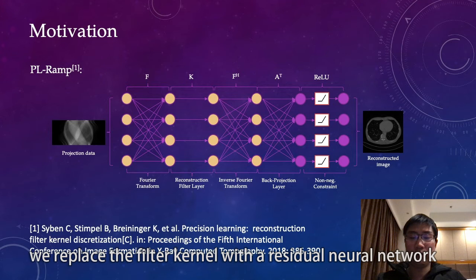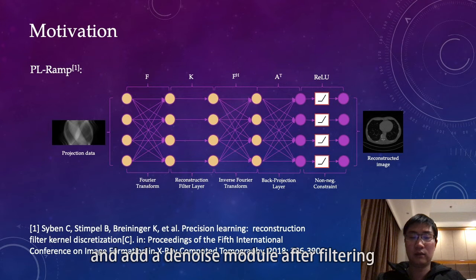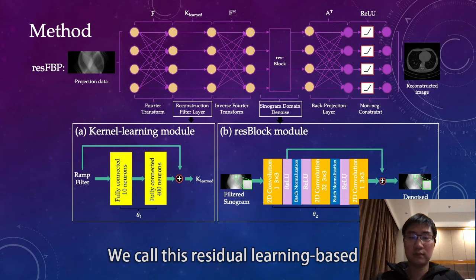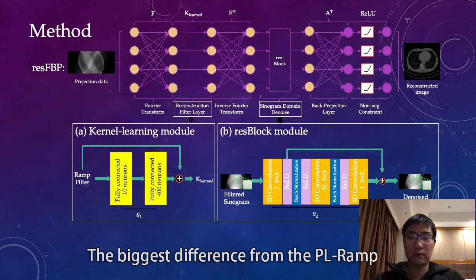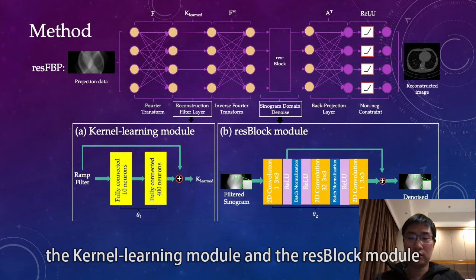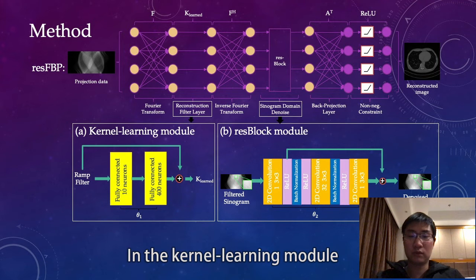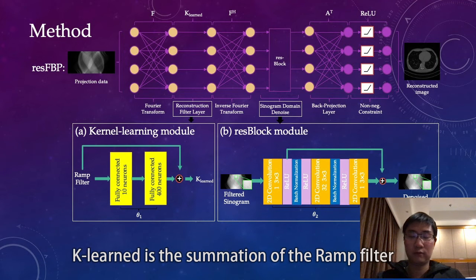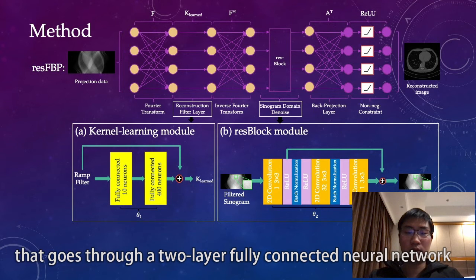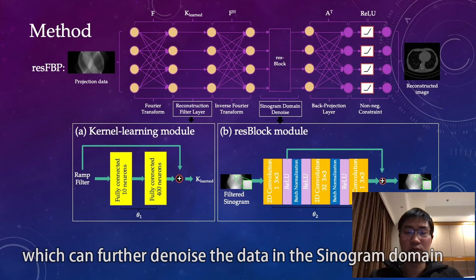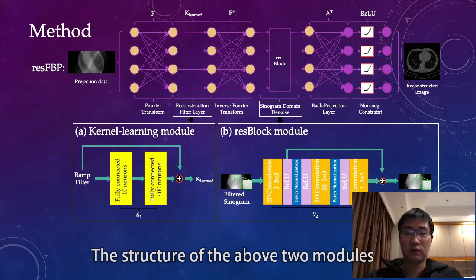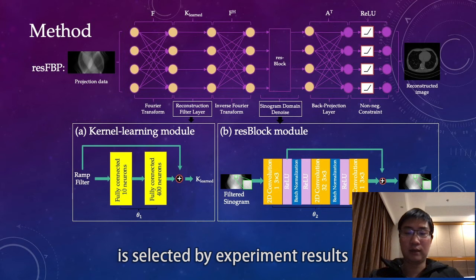To solve this problem, we replace the filter kernel with a residual neural network and add a denoise module after filtering. We call this residual learning-based filtered back-projection network ResT FBP. The biggest difference from PL-Ramp lies in two modules: the kernel learning module and the ResT block module. In the kernel learning module, the kernel is the summation of the ramp filter and its residual path that goes through a two-layer fully connected neural network. The ResT block module is a typical ResT lightweight structure, which can further denoise the data in the sinogram domain. The structure of these two modules is selected by experiment results.